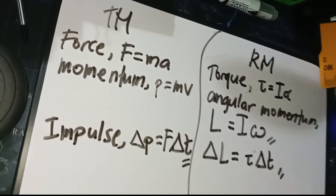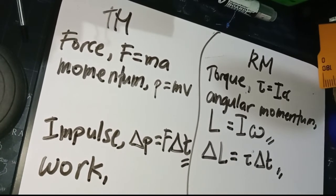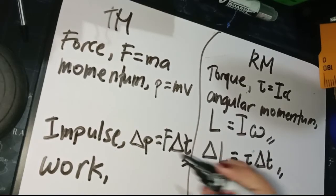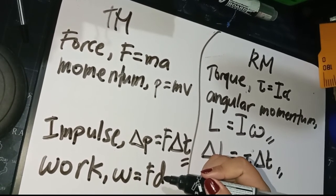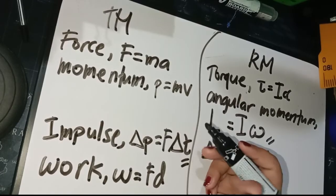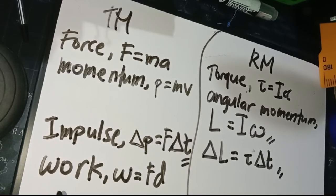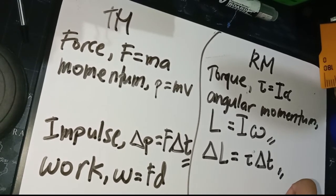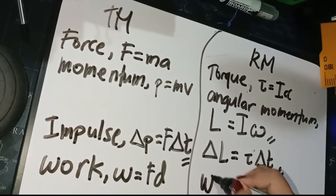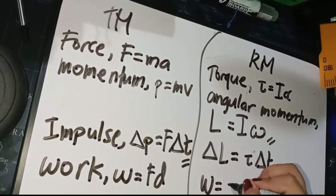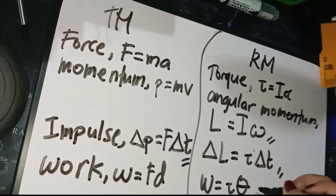We also have work. In translational motion, work W equals force multiplied by displacement. The analogous expression of work in rotational motion is W equals tau times theta — torque multiplied by angular displacement.